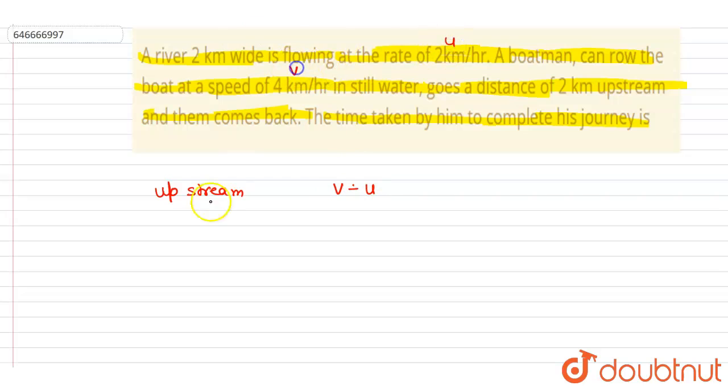And v is the velocity of the man. And in downstream they will be in same direction, so we'll directly add them. And if I calculate the time taken in the two journey.